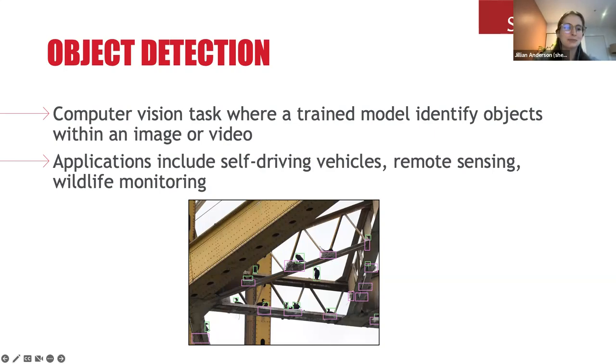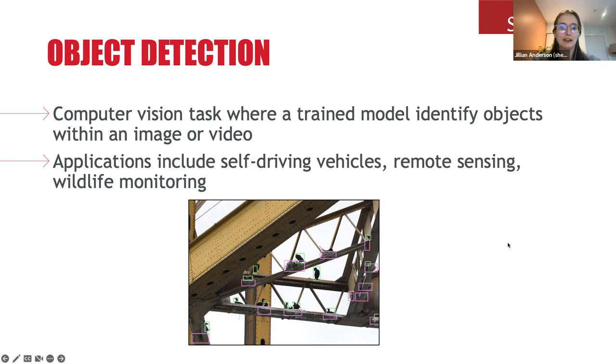We're going to be talking about the use case of doing census counts for cormorants on urban bridges. There are many more use cases for wildlife monitoring, such as tracking large cetaceans like humpback whales or orcas, counting wildlife in game preserves — this was used in the Serengeti for census counts using low flyby planes — and tracking movement of individuals within colonies, particularly hibernating individuals. Object detection has a lot of different use cases; it's pretty exciting.